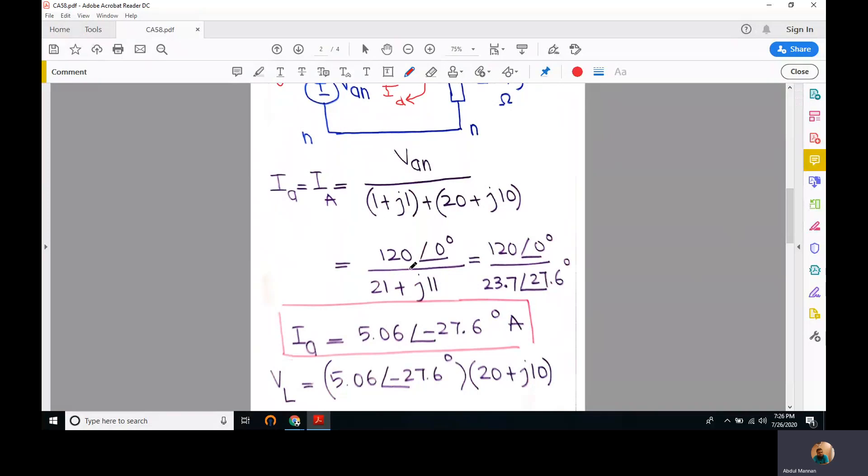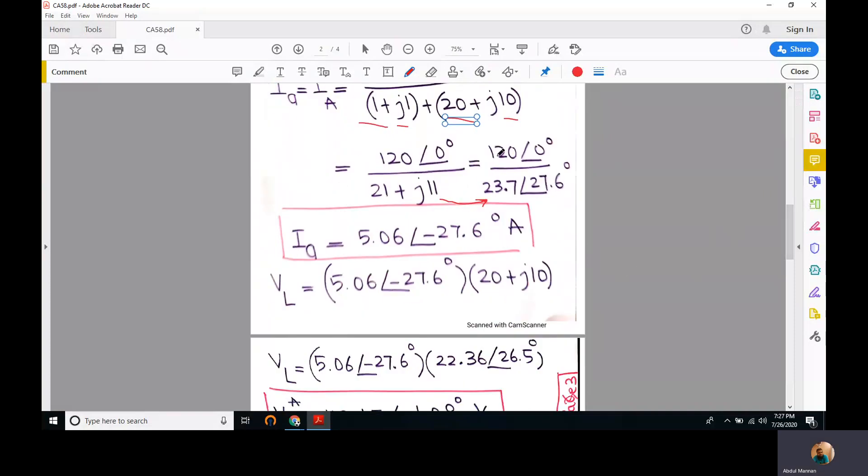Ia equals 120 at an angle of zero divided by... the real part is added to the real part, the imaginary part to the imaginary part, so 21 plus j11. We can convert this number into its polar representation, then divide these two complex numbers by dividing their magnitudes and subtracting their angles. So 120 divided by 23.7 is 5.06 at an angle of minus 27.6 degrees.